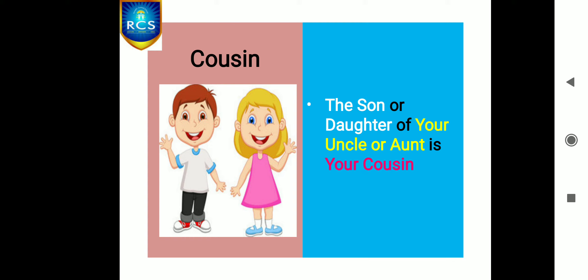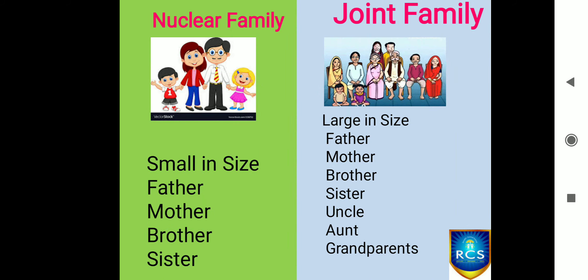Children, are you clear about joint family? Shall we recall the concepts of nuclear family and joint family once again? A nuclear family consists of father, mother, brother, and sister — it is otherwise called a small family. Then, a joint family consists of father, mother, brother, sister, uncle, aunt, and grandparents — it looks large in size.